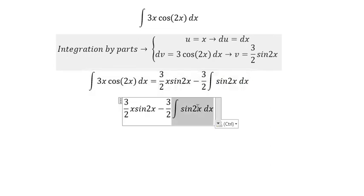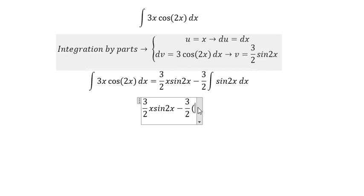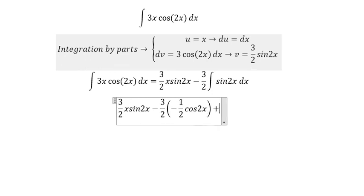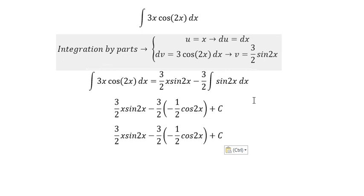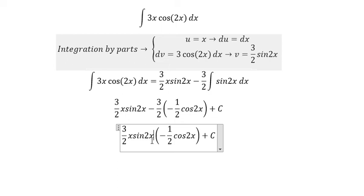So this one we can change about 1 over 2 with the negative cos 2x plus c. This one multiply with this one and we got about 3 over 4 in the positive.